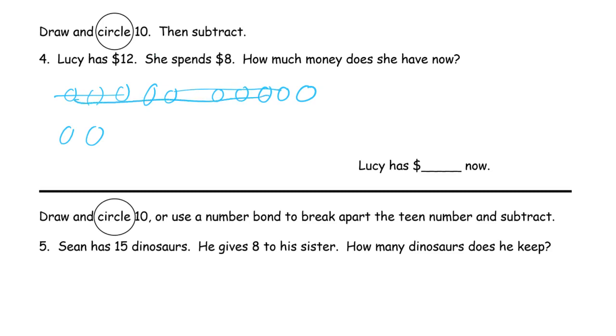That means there's going to be 2 left. How much money does she have left? So these 2 plus those 2, 4. 12 minus 8 equals 4.